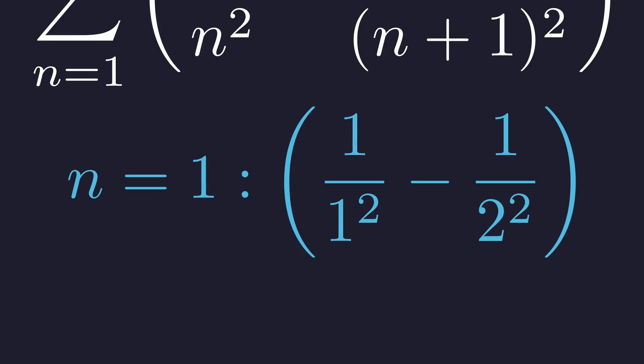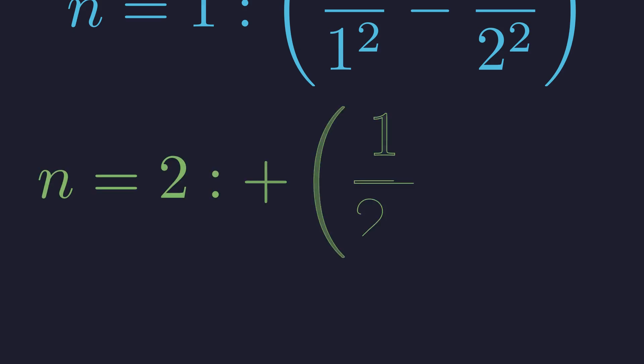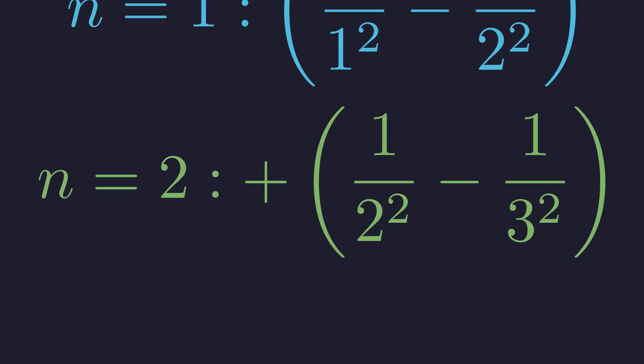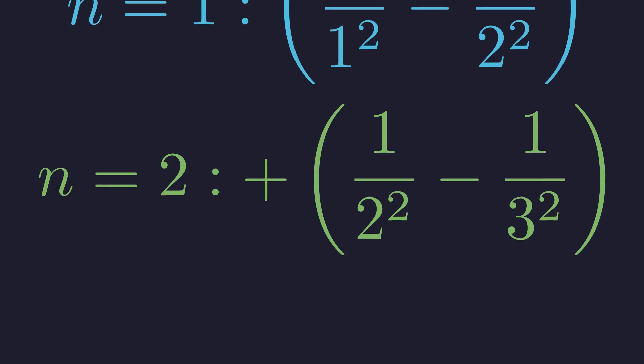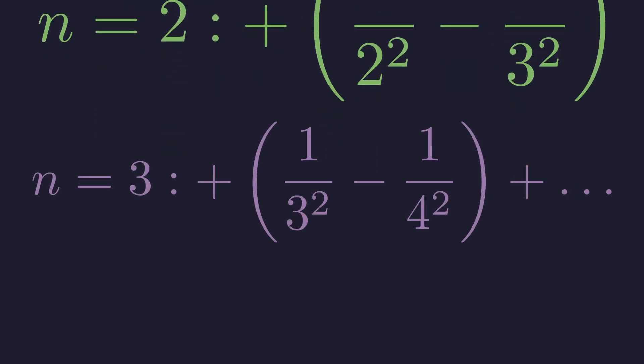For n=1, we have 1/1² − 1/2². For n=2, we add 1/2² − 1/3². For n=3, we add 1/3² − 1/4².